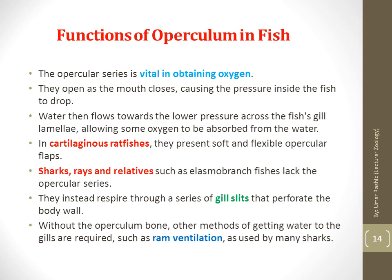In the case of sharks, rays, and relatives — the elasmobranchs — fishes lack the opercular series entirely. They instead respire through a series of gill slits that perforate the body wall. Without the opercular bone, other methods of getting water to the gills are required, such as ram ventilation, as used by many sharks.